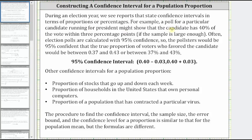For example, a poll for a particular candidate running for president might show that the candidate has 40% of the vote within three percentage points. Often election polls are calculated with 95% confidence, so the pollsters would be 95% confident that the true proportion of voters who favored the candidate would be between 0.37 and 0.43, or between 37% and 43%, obtained by subtracting 0.03 from 0.40 and adding 0.03 to 0.40, where 0.40 is the point estimate for the population proportion and 0.03 is the error bound or margin of error.